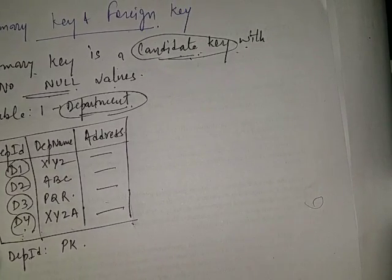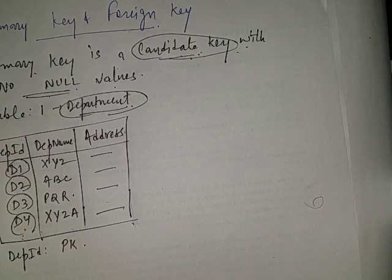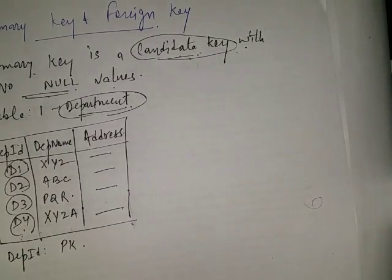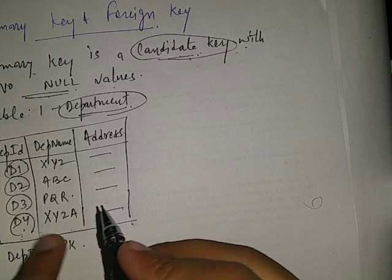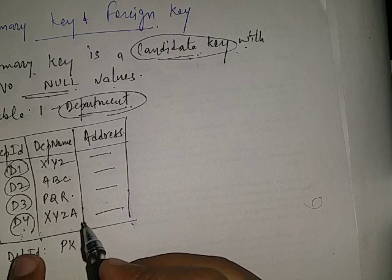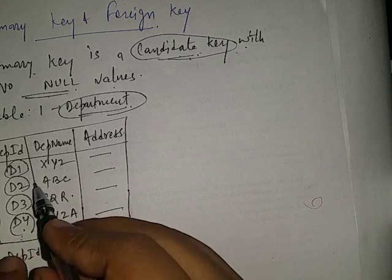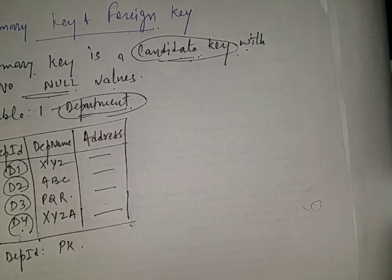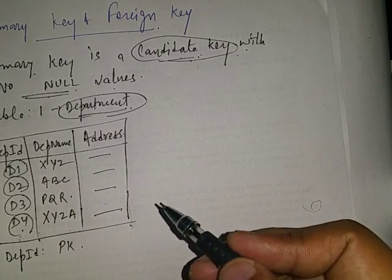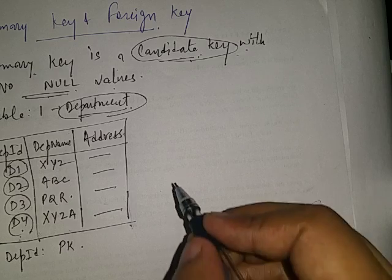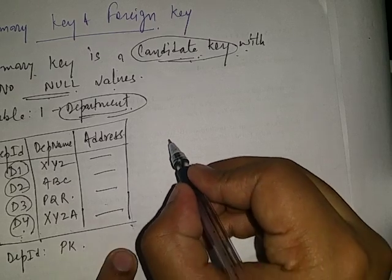Foreign key is closely related to primary key, since a foreign key is basically a reference to a primary key in some other table. First let us take an example, and then we'll go to the definition of what a foreign key is.